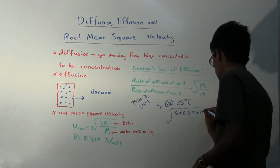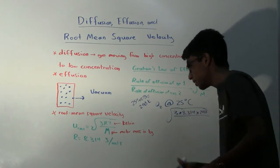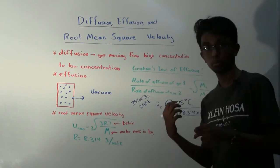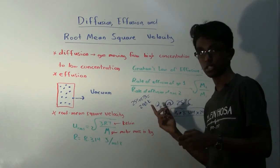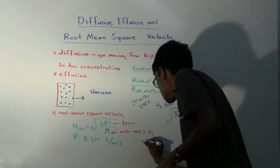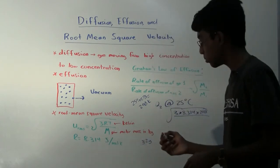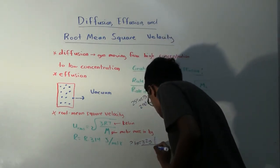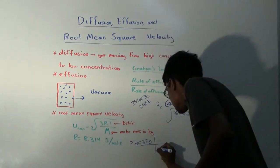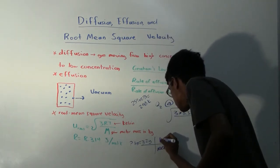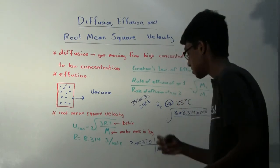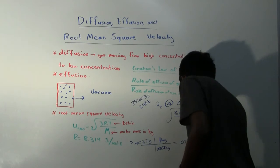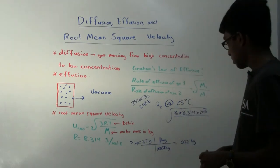So times 298 divided by the molar mass of oxygen in kilograms. Now, from the periodic table, we get that the molar mass of oxygen is 32 grams. We need this in kilograms, so we'll quickly do the dimensional analysis. There are 1000 grams in one kilogram. So the molar mass of oxygen in kilograms is 0.032.